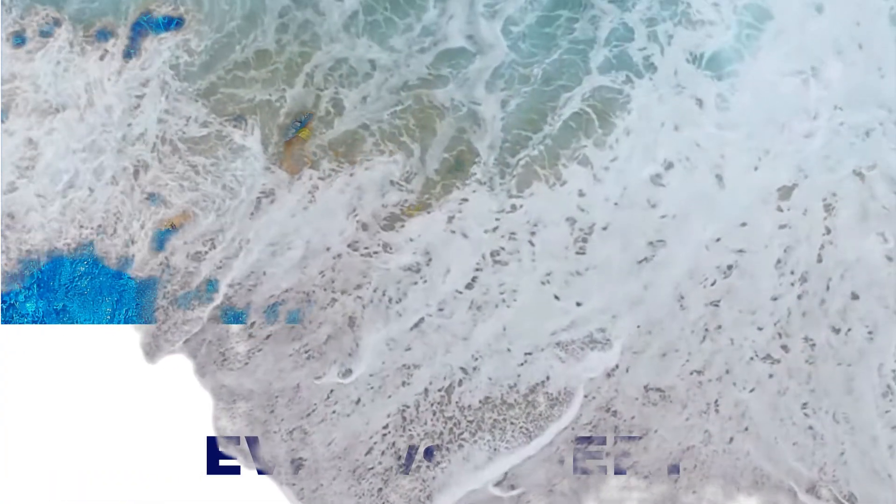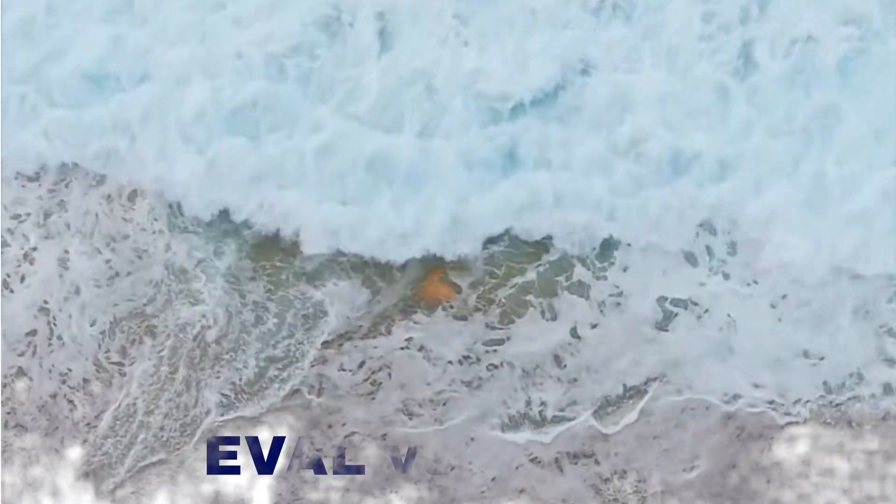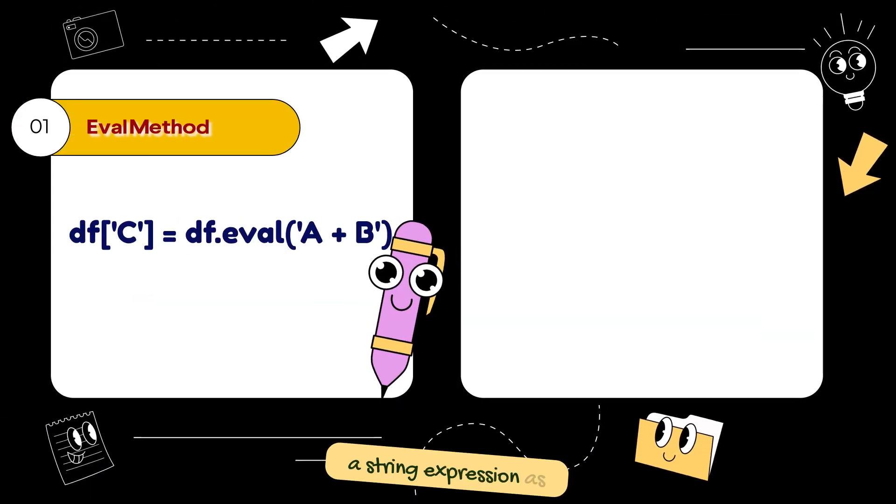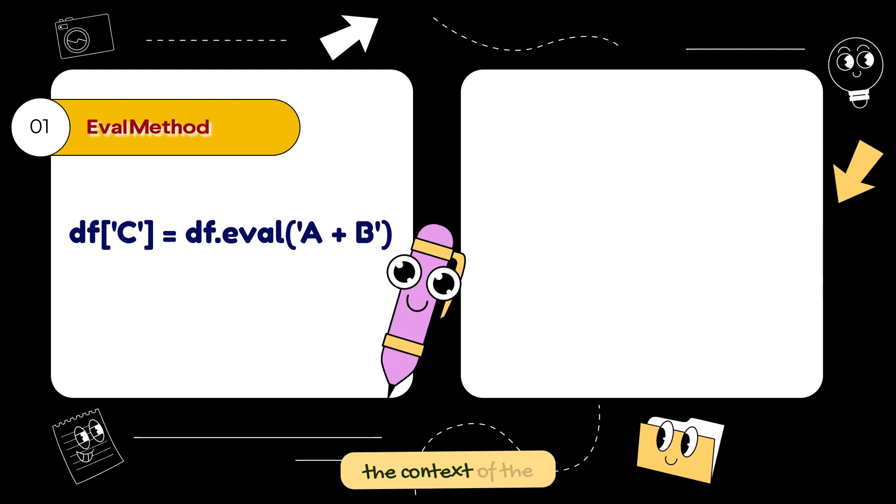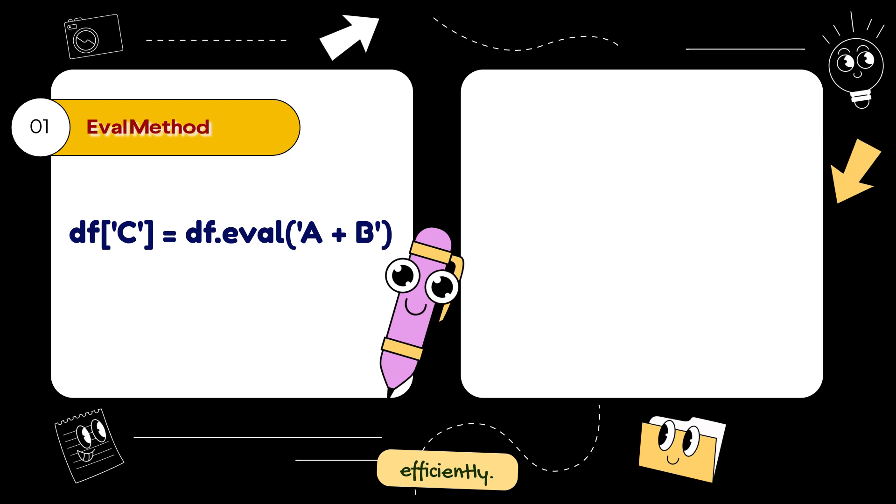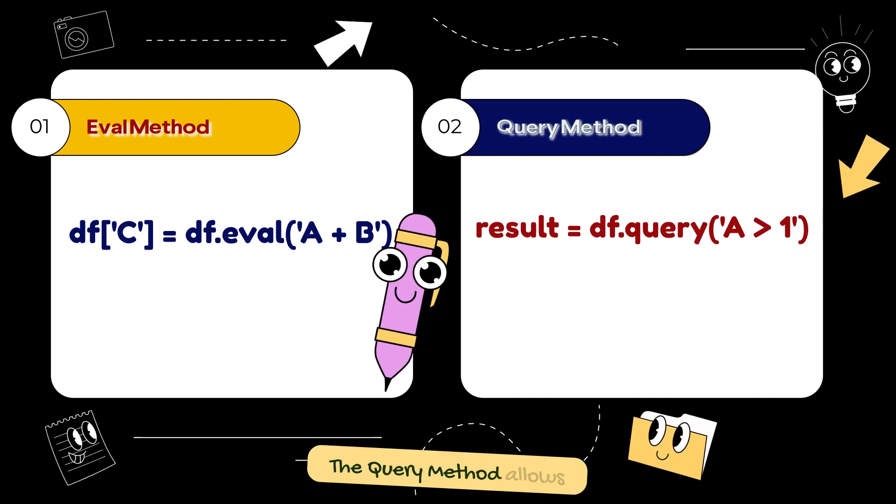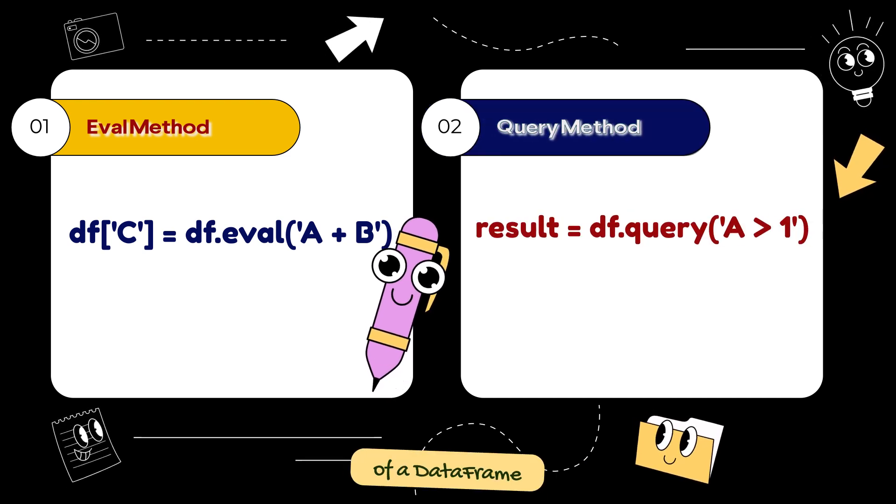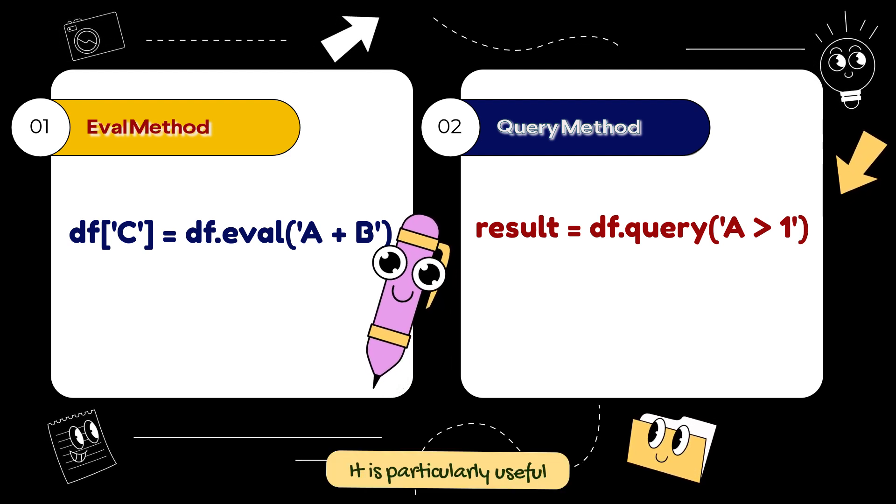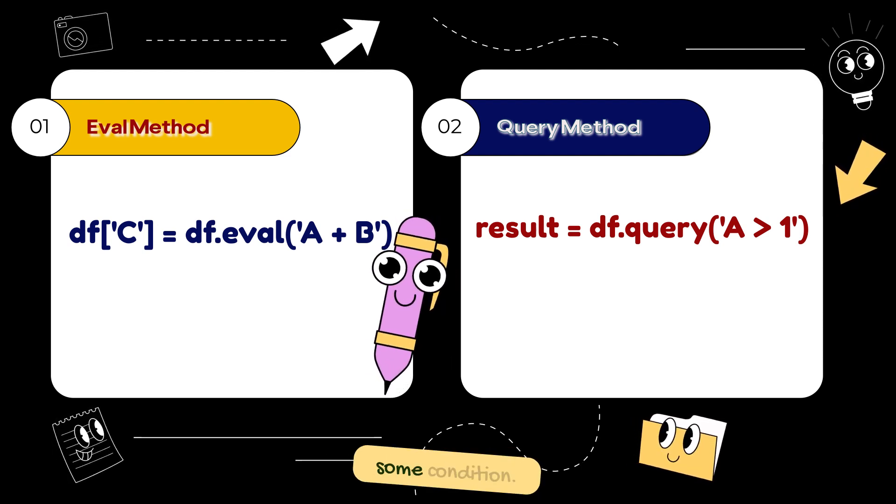So what is the difference between eval and query methods? The eval method evaluates a string expression as a Python expression within the context of the dataframe. It allows you to perform element-wise operations efficiently. The query method allows you to filter rows of a dataframe using a query expression. It is particularly useful when you need to filter rows based on some condition.